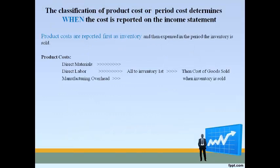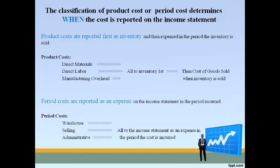Why does it matter if a cost is a product cost or a period cost? The classification determines when the cost is reported on the income statement. Product costs go to inventory first and are reported as cost of goods sold only when inventory is sold. Period costs are reported on the income statement in the period they are incurred.